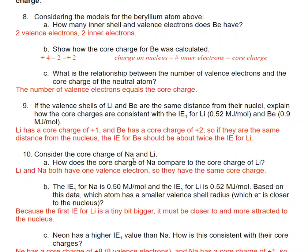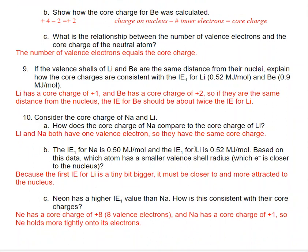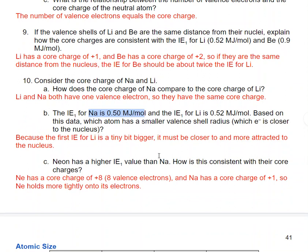Sodium and lithium both have one valence electron, so they have the same core charge. But when we look at the ionization energy, it's a little bigger for lithium than for sodium. This means the valence electron in the 2s shell must be a little closer than the valence electron in the 3s shell of sodium. Neon has a higher ionization energy than sodium because neon has a core charge of +8 and sodium has a core charge of +1 — neon's nucleus is more positive and holds its electrons more tightly.